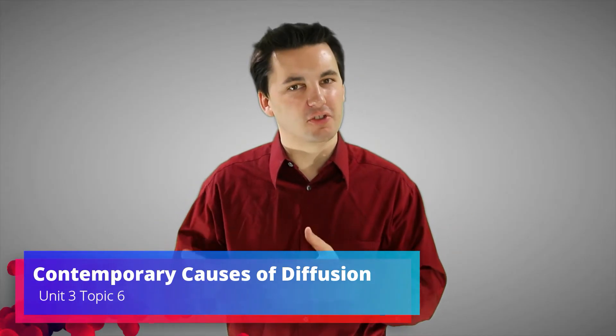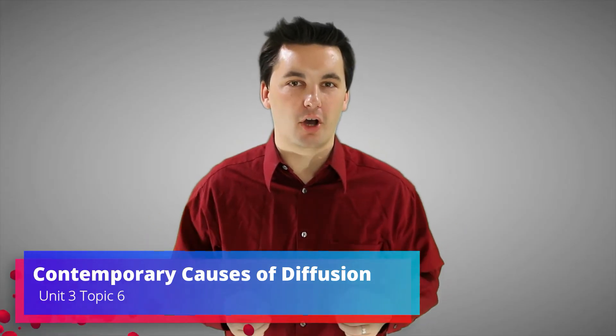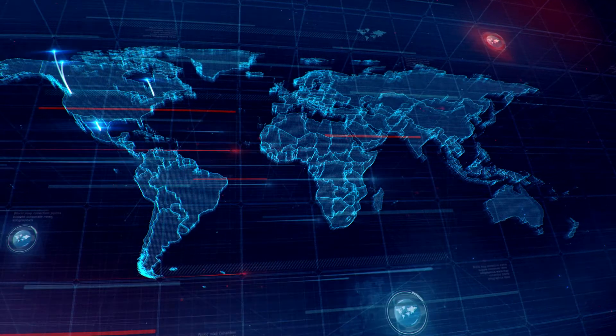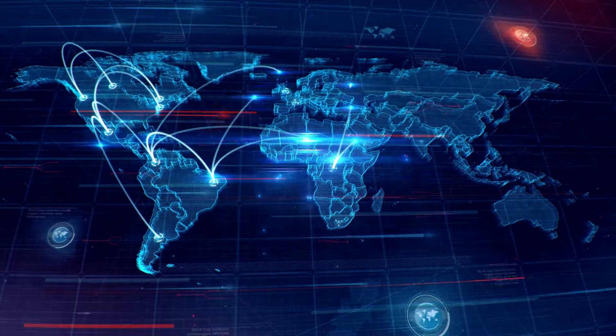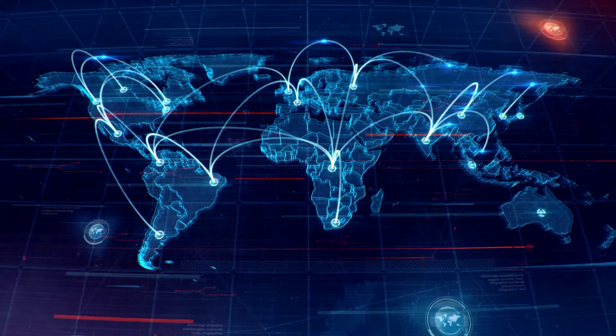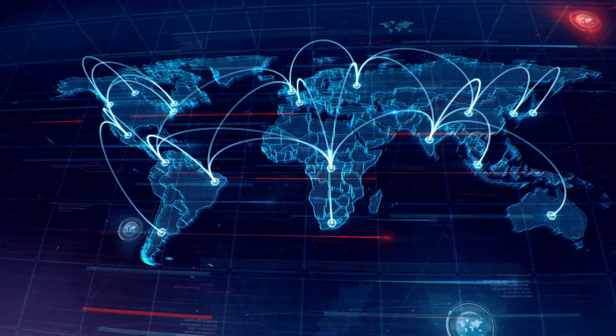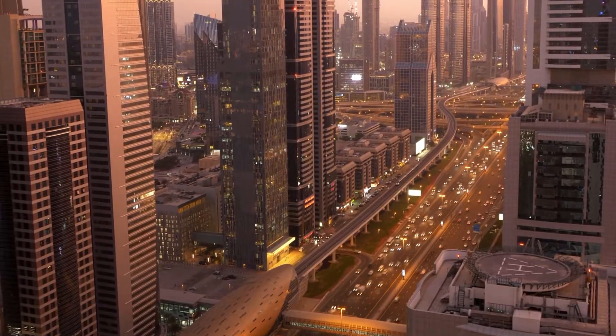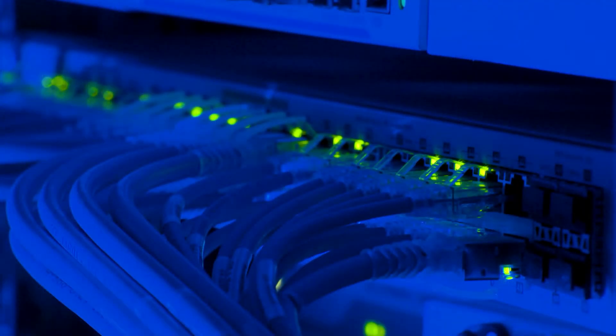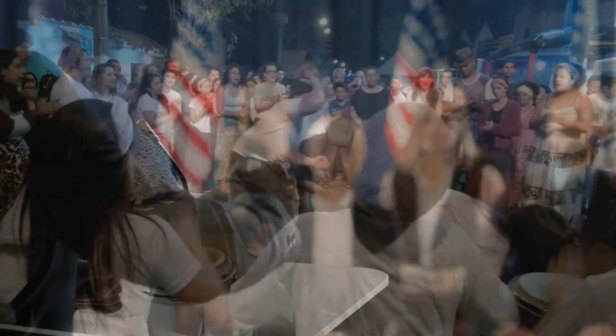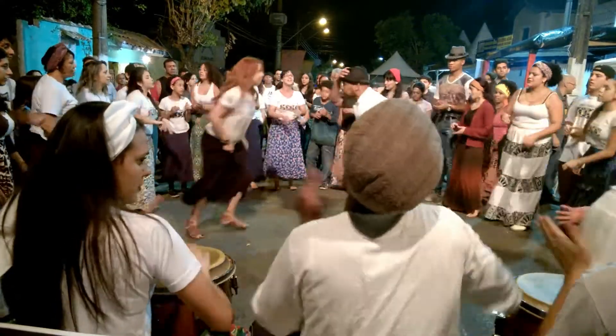Today we're going into unit 3 topic 6 where we're going to look at contemporary causes of diffusion. Oftentimes today diffusion is happening for a number of different reasons. We can see that diffusion is occurring because of globalization, urbanization, advancements in technology, increased access to information thanks to the internet and social media, political and economic systems, and just general interactions between people around the world.